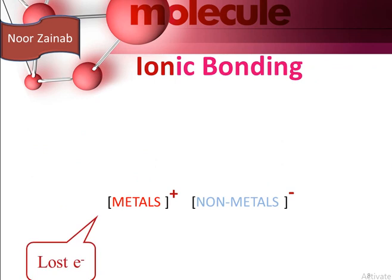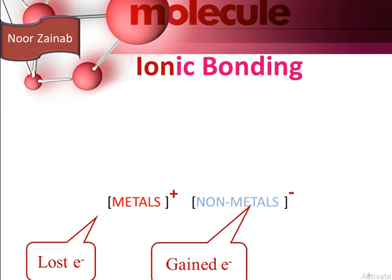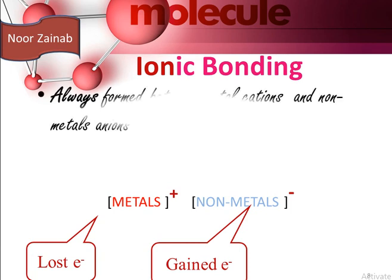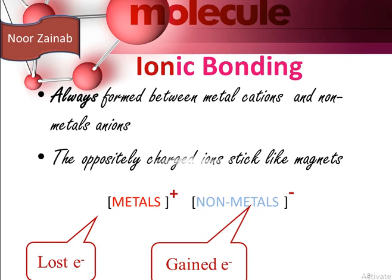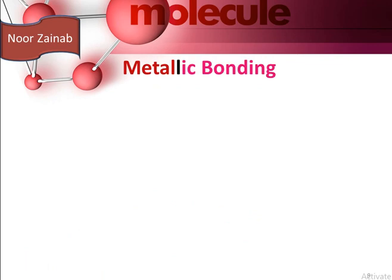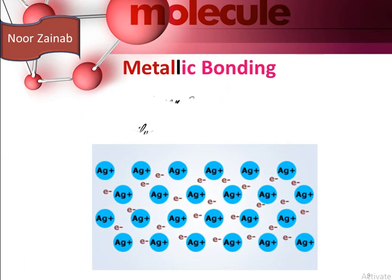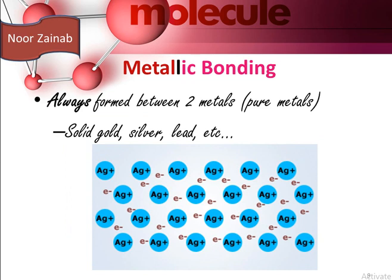During ionic bonding, the metal atoms lose electrons and form positive ions, and non-metal atoms gain electrons and form negative ions. An ionic bond is always formed between metal cations and non-metal anions. The oppositely charged ions stick together like magnets. Metallic bonding is always formed between two metals — pure metals, for example solid gold, silver, lead, etc.